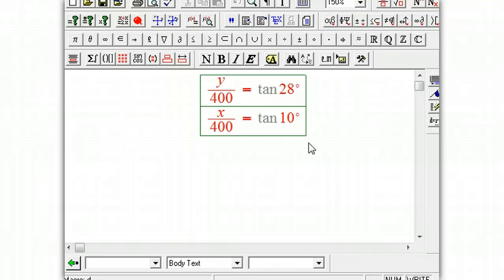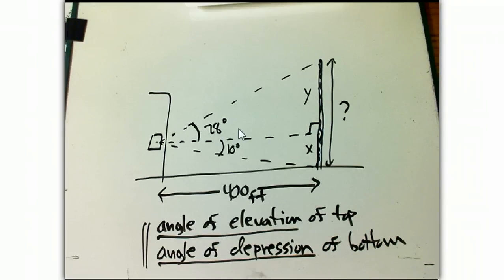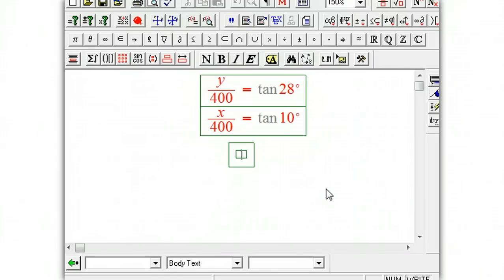That's going to allow us to solve. Now let's flip back just so you can look. So opposite over adjacent and then opposite over adjacent again, x over 400 and y over 400.